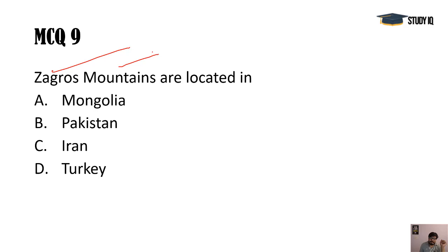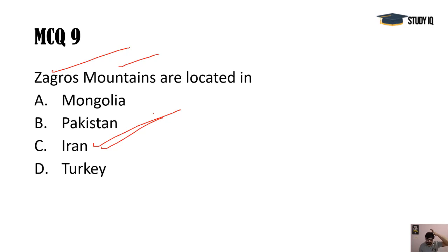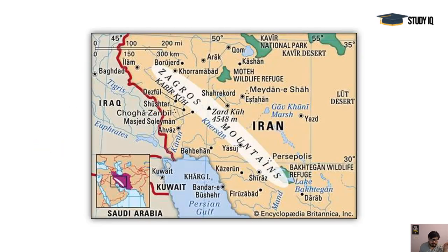Zagros Mountains: this country is much highlighted in the news, so geographic questions may be asked. The Zagros Mountains are located in Iran — not Mongolia, not Pakistan, where the Suleiman Range is located. The Zagros Mountains run from southeast to northwest, moving towards Turkey. That is an important geographic detail. That is all for today — we will meet again tomorrow. Thanks a lot, keep watching.